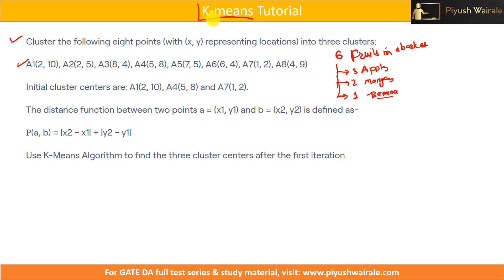It's a simple algorithm — nothing complex — but this type of question you can expect in the GATE exam. Here we have eight data points and the initial cluster centers are given to us. Now we need to classify and group these particular data points.